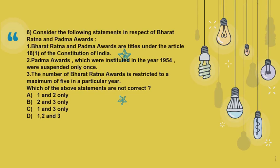Question 6: Consider the following statements in respect of Bharat Ratna and Padma Awards. Statement 1: Bharat Ratna and Padma Awards are titles under Article 18 of the Constitution of India. Statement 2: Padma Awards, which were instituted in the year 1954, were suspended only once. Statement 3: The number of Bharat Ratna Awards is restricted to a maximum of 5 in a particular year. Statement 1 is incorrect — national awards such as Bharat Ratna, Padma Vibhushan, Padma Bhushan, and Padma Shri do not amount to titles within the meaning of Article 18, and thus are not to be used as prefixes or suffixes to the name of the recipient in any manner. Article 18 abolishes all titles and prohibits the state from conferring titles on anybody, whether a citizen or a non-citizen.